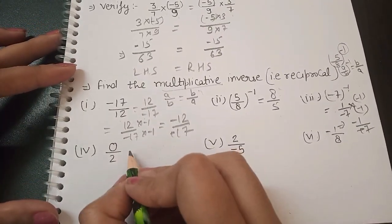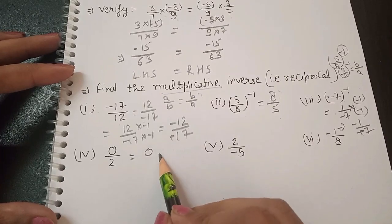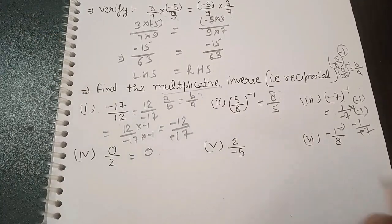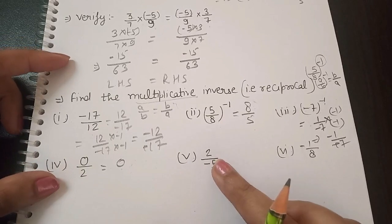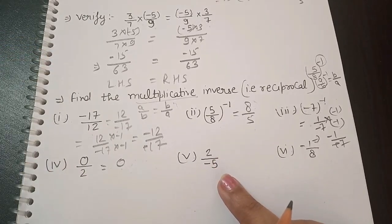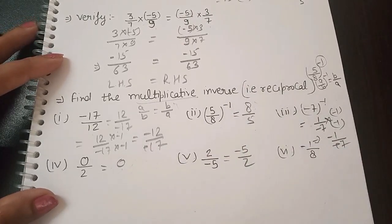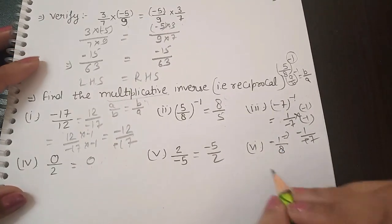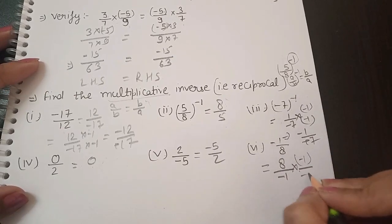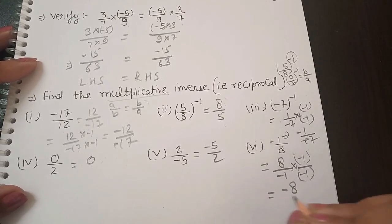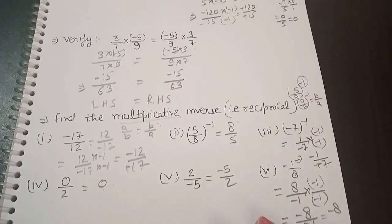For (5/8)^(-1), the negative exponent means reciprocal, so the answer is 8/5. For -7, its reciprocal is 1/(-7); since denominator must be positive, multiply by -1 to get -1/7. For 0/2, which equals 0, there is no reciprocal — 0 has no reciprocal. For 2/(-5), the reciprocal is -5/2. For -1/8, the reciprocal is 8/(-1); multiply by -1 to get -8/1, which is -8.